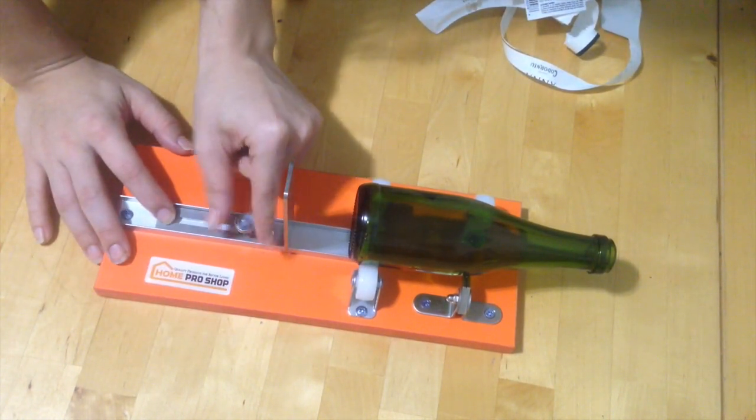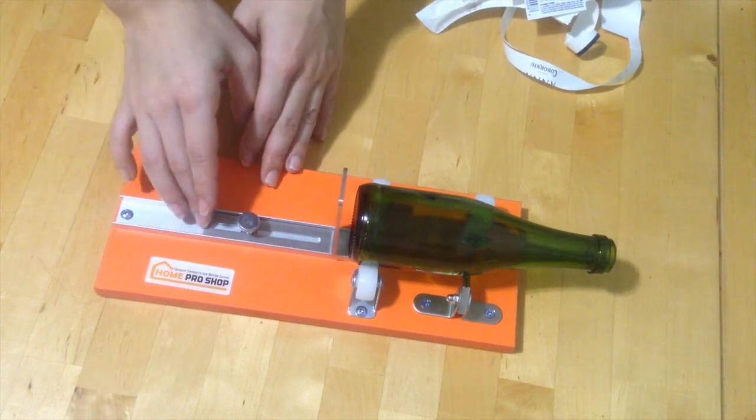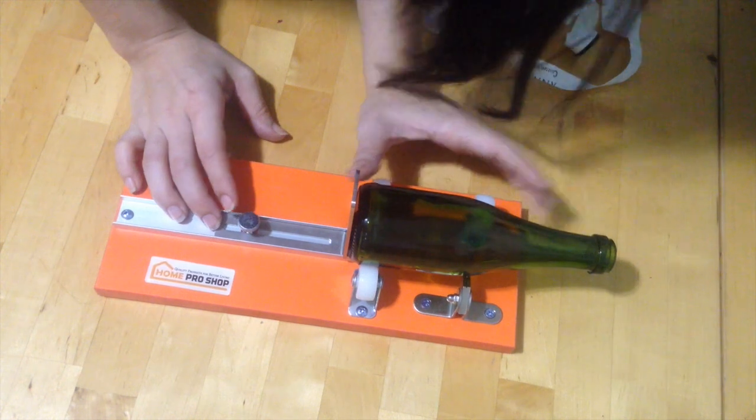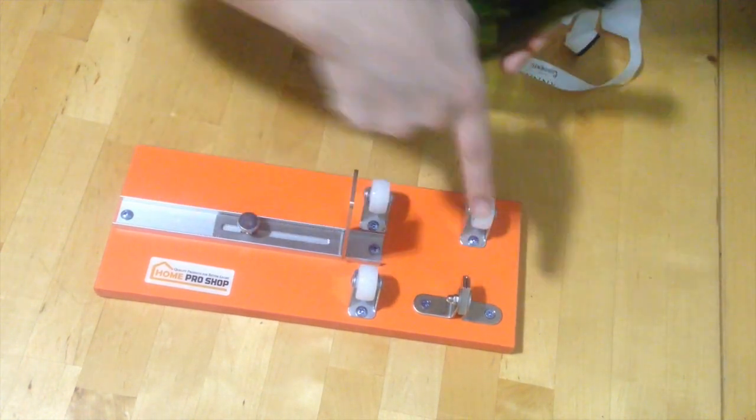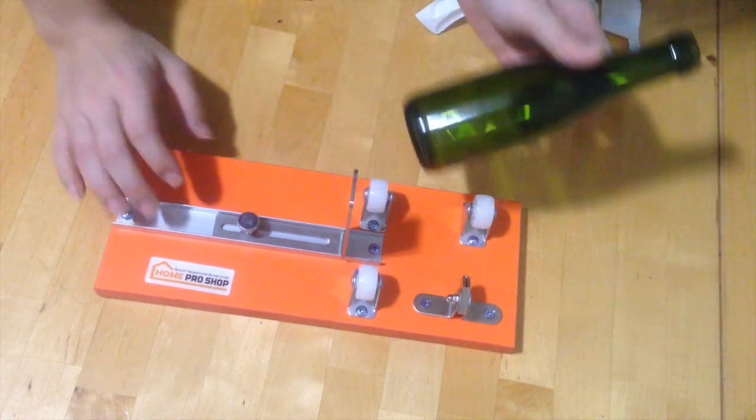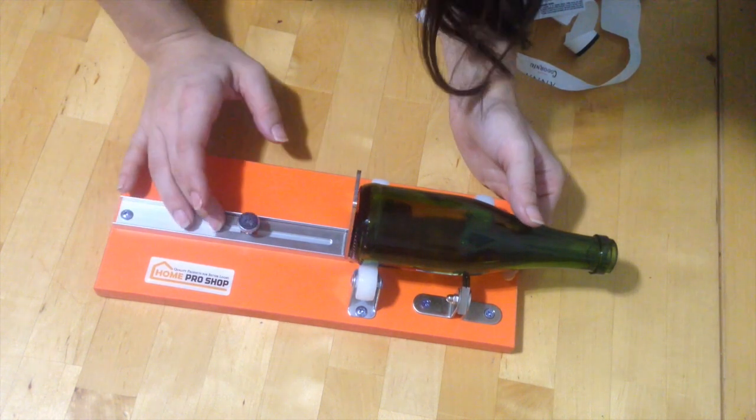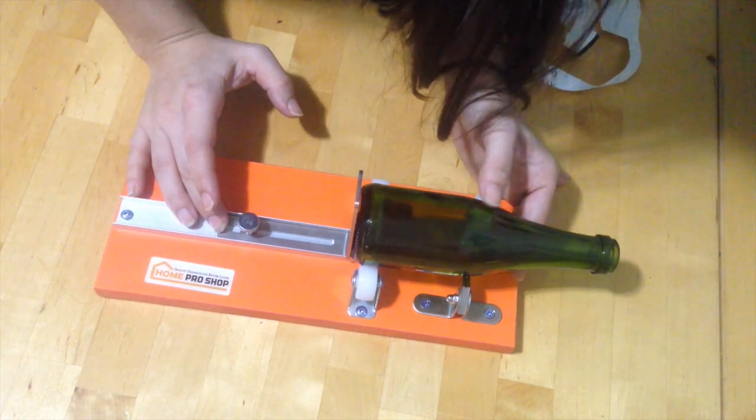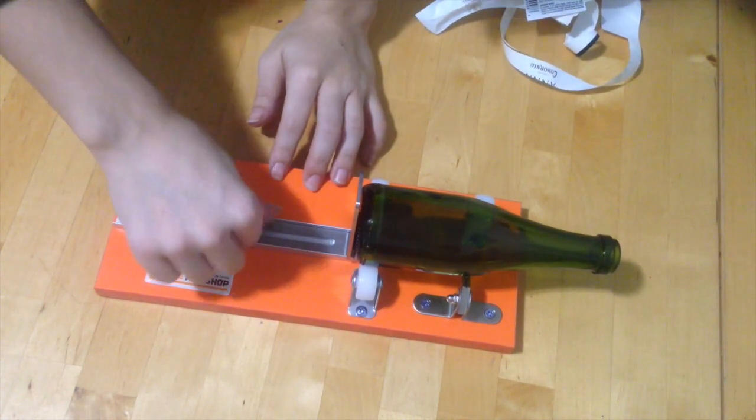For longer bottles, bigger bottles, you're going to turn it the other way. Okay. This is the glass cutter on this little rolling doohickey. And this is meant to just cut glass bottles or round glass.